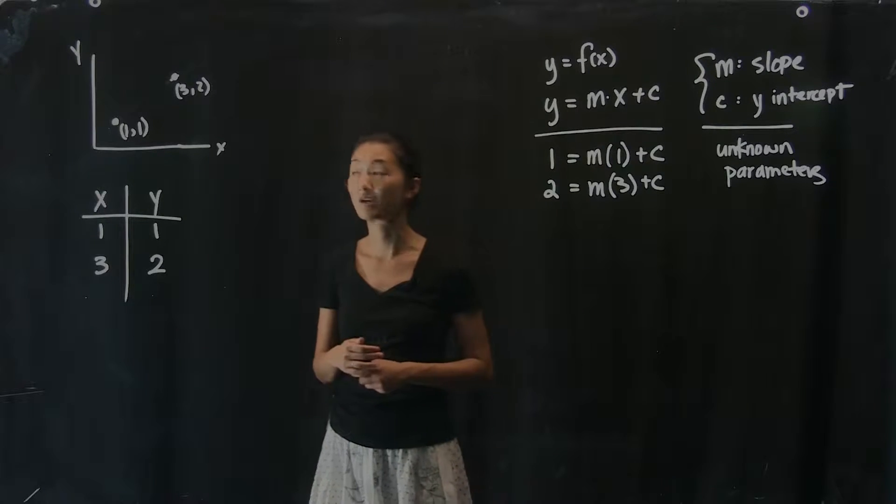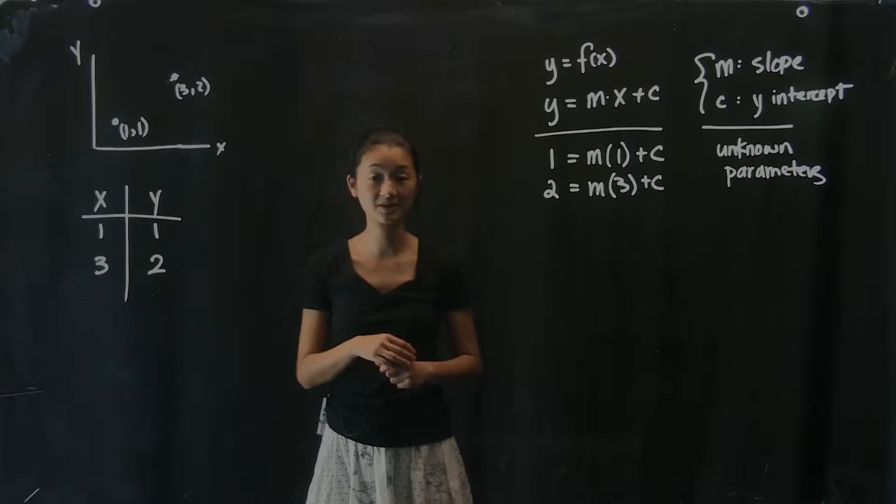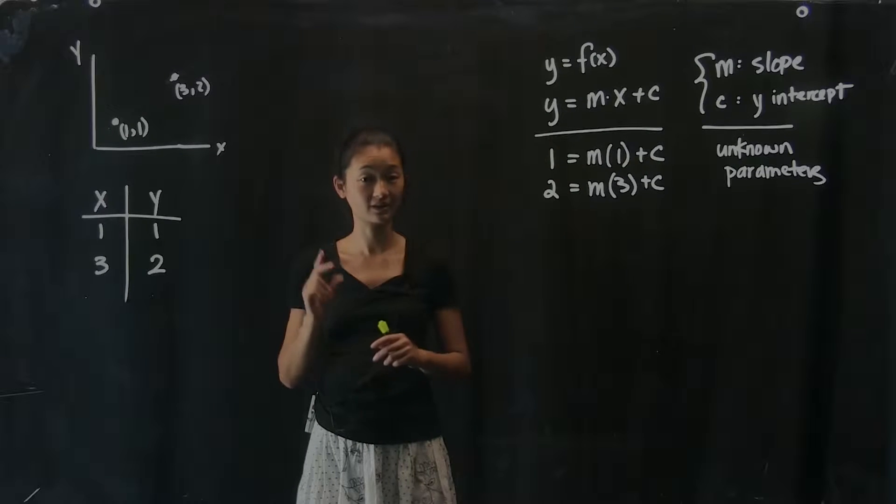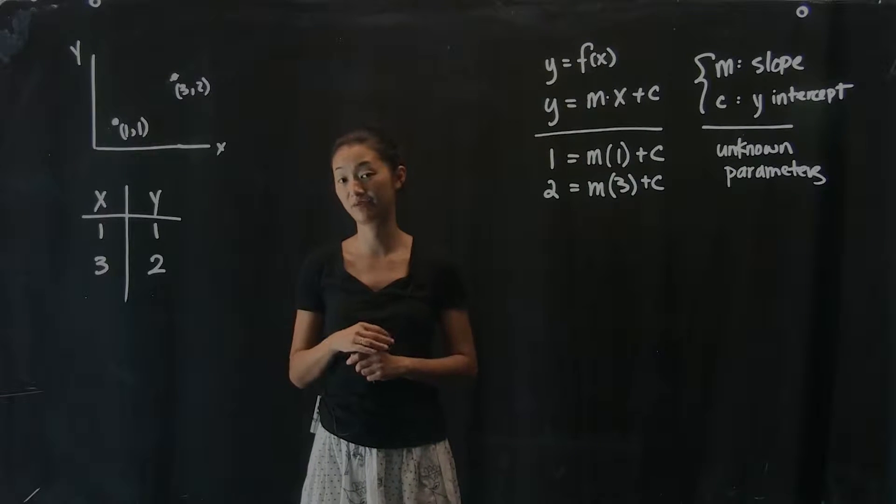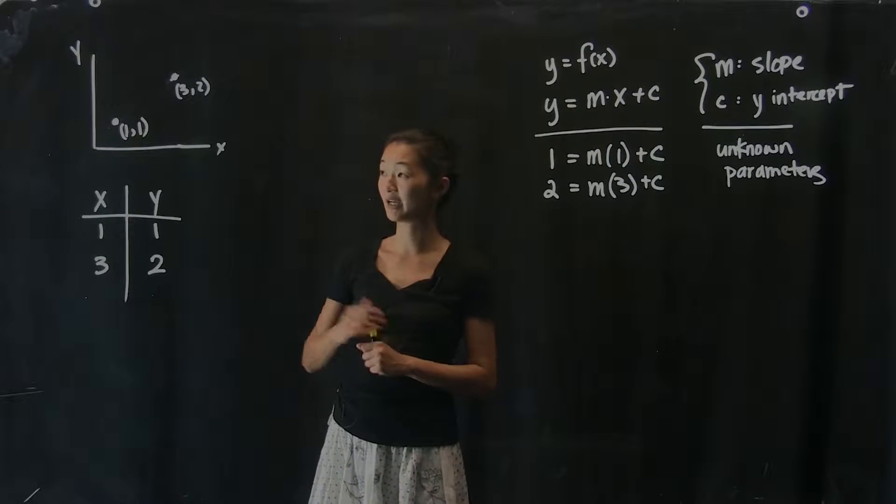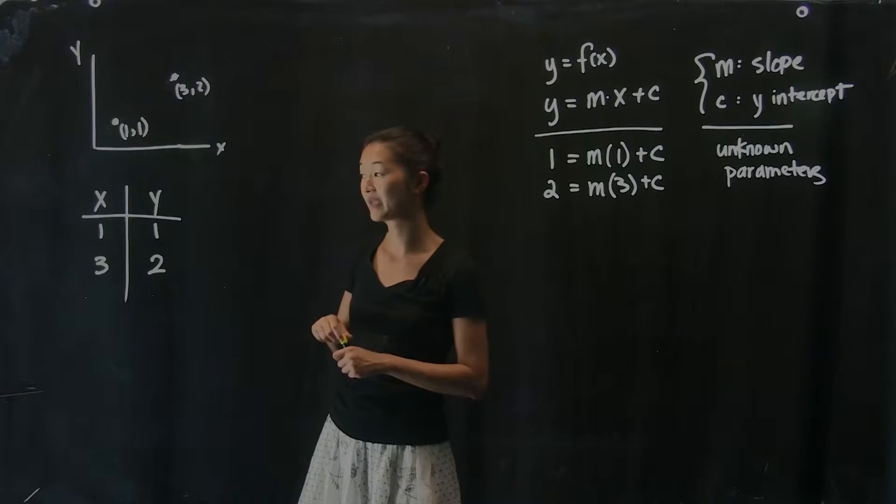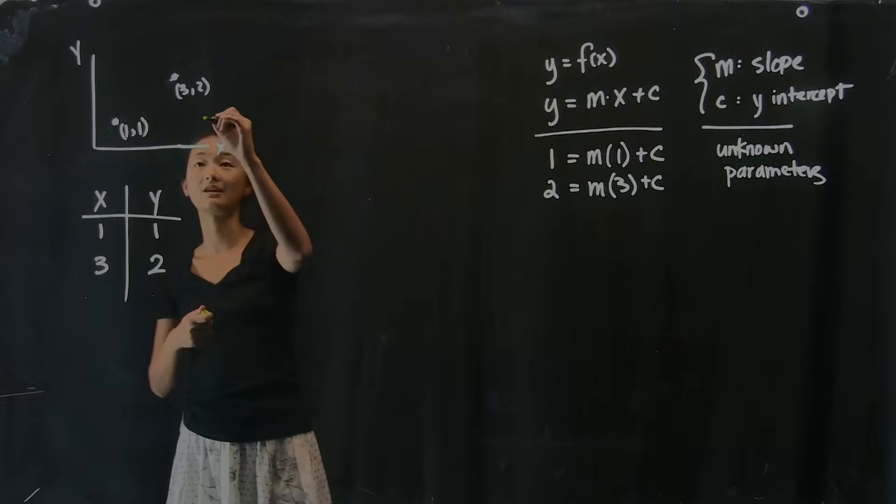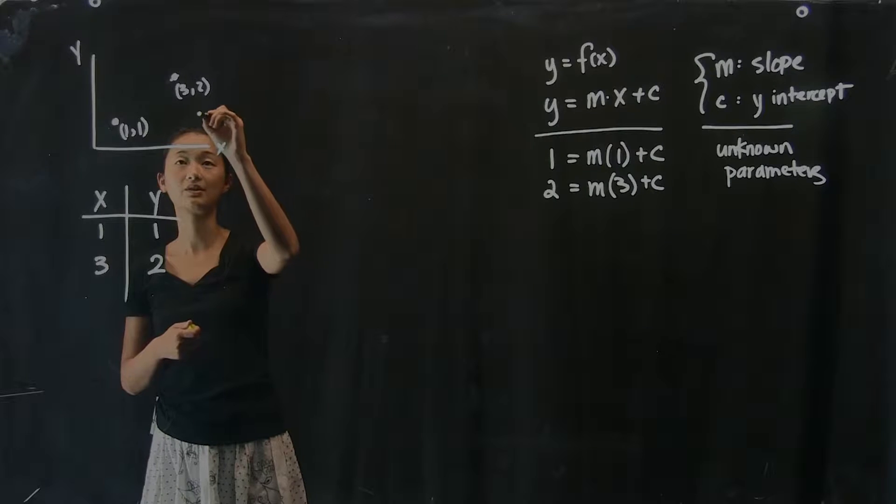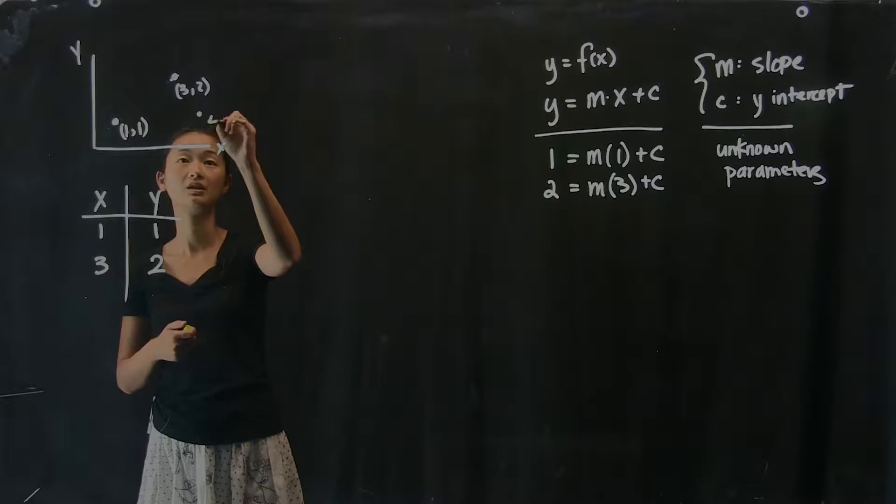Continuing from last time, where we fit a line through two points, we are going to do something slightly more complicated, which is trying to fit a line through three points. So I'm going to add one more point to my plot over here, and let's say that this line has to also go through the point 4, 1.5.